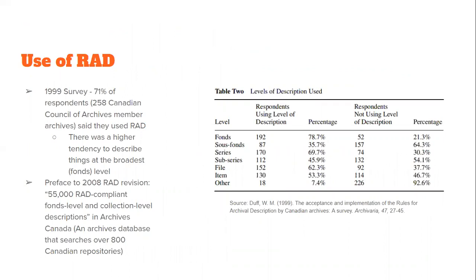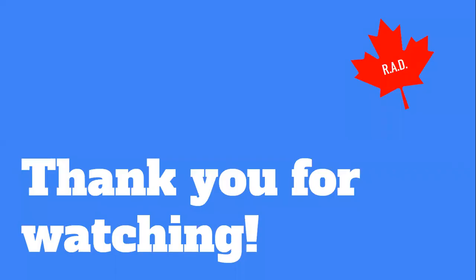Despite its challenges, RAD is still widely present in Canadian archives today thanks to its successful implementation in the 90s. In a 1999 survey, 71% of responding Canadian Council archives members said that they were using RAD, and in 2008 there were 55,000 RAD-compliant fonds-level descriptions in the national database Archives Canada. It should be noted that although RAD was widely accepted, many archives only partially followed the standard, stopping at the broader levels of description. It's possible that the standard will be revised again in the near future to a lighter, more friendly user guide. Thank you for watching.